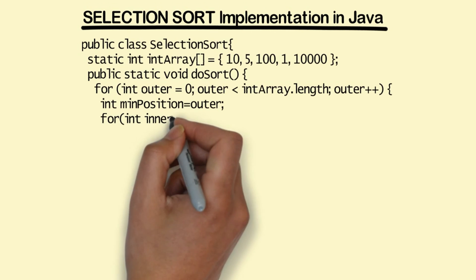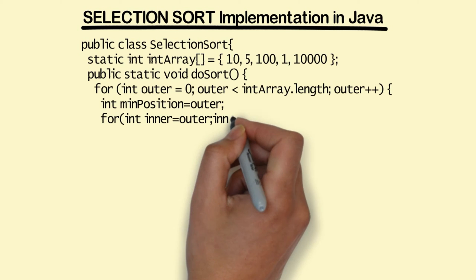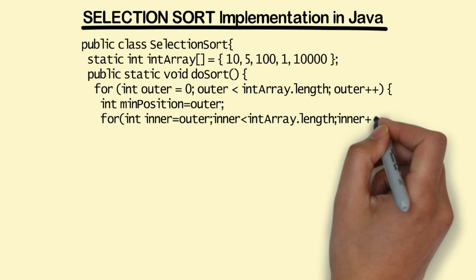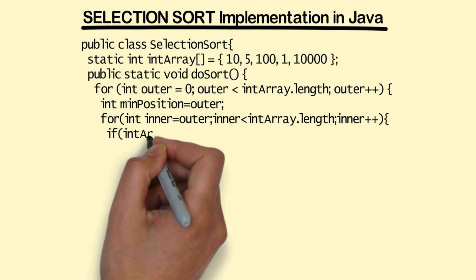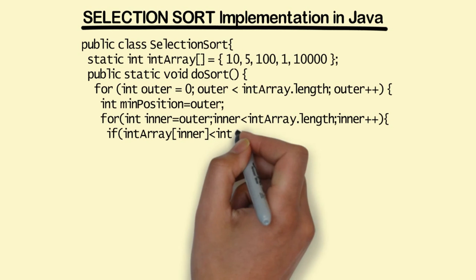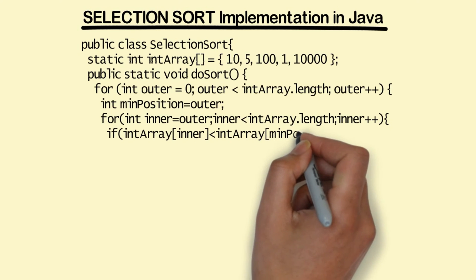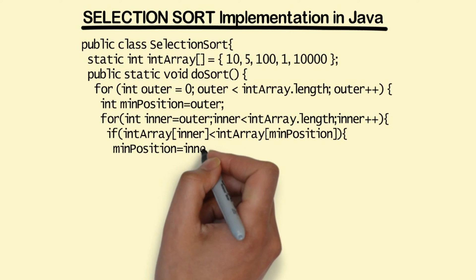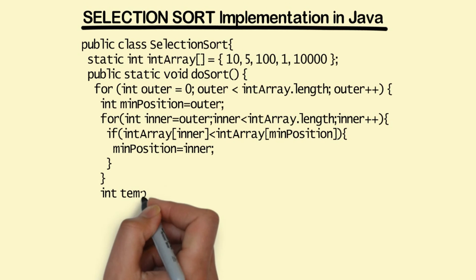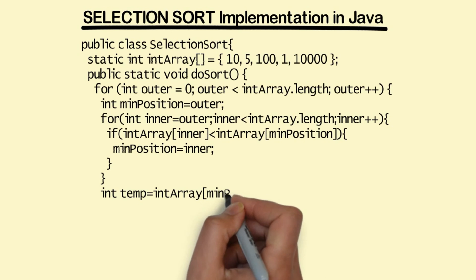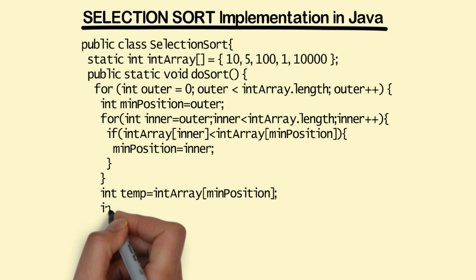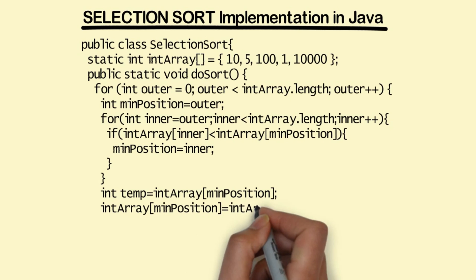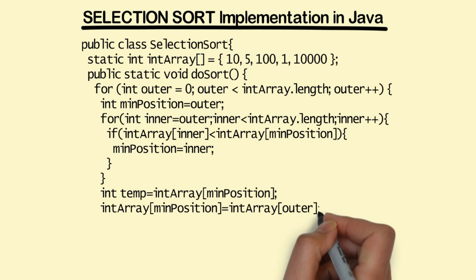An int variable called minPosition is initialized to outer, which always takes the value of the current iteration number starting from zero. We have another loop with counter inner which starts from the outer position and goes to the end of the array. This inner loop is for finding the minimum of the unsorted elements, and minPosition holds the index of the minimum number found so far.